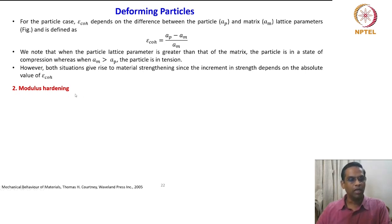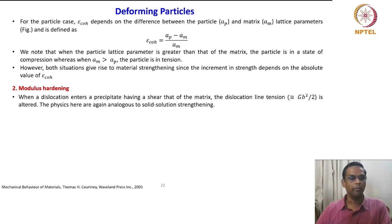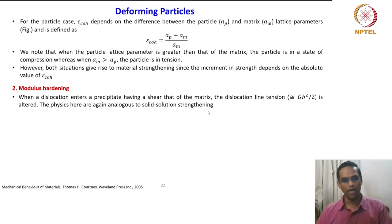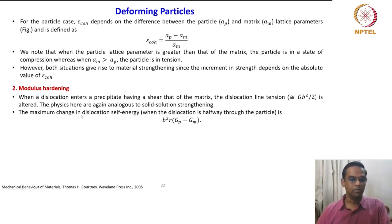We will look at modulus hardening in a deforming particle type. When the dislocation enters the particle having a different shear modulus than the matrix, the dislocation line tension G·b² / 2 is altered. The physics here are analogous to solid solution strengthening. The maximum change in the dislocation self-energy — when the dislocation is halfway through the particle — is b²·R times (G_p minus G_m).